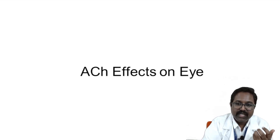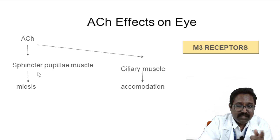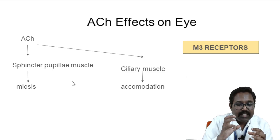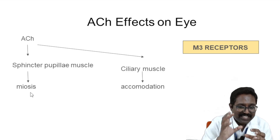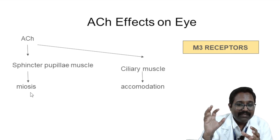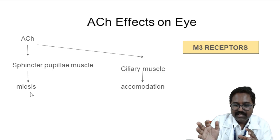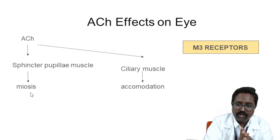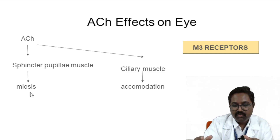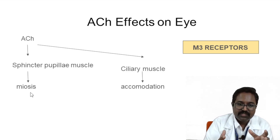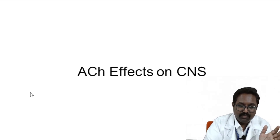Effect of acetylcholine on the eye: acetylcholine acts on the circular muscle fibers (also called sphincter pupillae), causing contraction. M3 receptors on the circular muscles are responsible for miosis — constriction of the pupil, reducing pupil size. M3 receptors are also present on the ciliary muscles of the iris, leading to accommodation (near vision). When atropine is given, there is loss of accommodation and passive mydriasis. Acetylcholine causes miosis — reduction of pupil size.